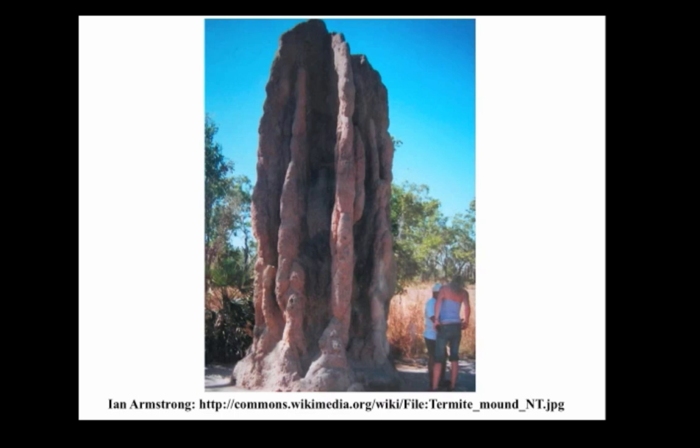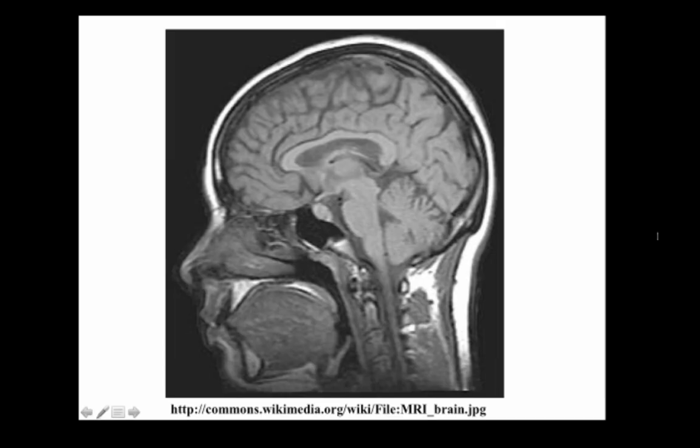Other social insects produce similar behavior. Here is an example of the kind of complex structure built by termites, which serves as a nest. A major focus of complex systems research is to understand how individually simple agents produce complex behavior without central control. In these examples the simple agents are insects, but we'll see many other kinds.